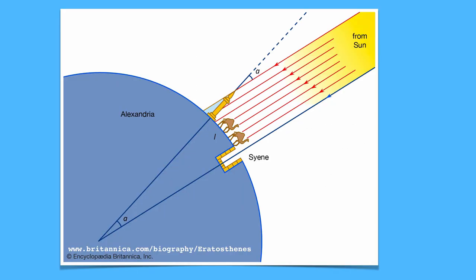The first known estimate of the Earth's size came from Eratosthenes measuring a shadow in Alexandria on the summer solstice. Since he knew the Earth was a globe, the change in angle between Alexandria and Cyene was due to the curvature of the Earth. Thus, he was able to estimate its size. Clever fellow.